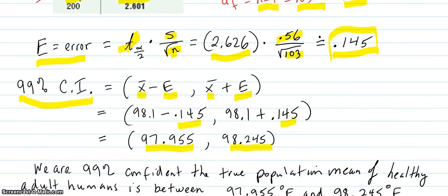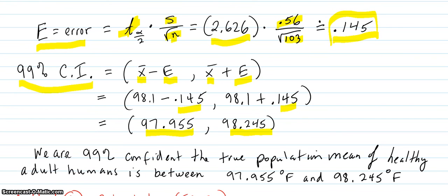And you always write it out in words. We are 99% confident the true population mean of healthy adult humans is between this degree Fahrenheit and this degree Fahrenheit. That's the way you finish off these problems.